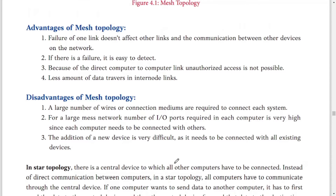Advantages of mesh topology: if one link fails, the network still has multiple paths to connect the computers. If there is a failure, it is easy to detect which computer is not working. Unauthorized access is not possible because each computer has a direct link to another. Disadvantages: a large number of wires or connections is required because every computer is connected to all others. A large mesh network requires a large number of I/O ports, and adding a new device is very difficult since it must be connected to all other devices.